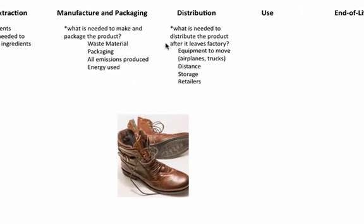The distribution stage looks at what is needed to distribute the product after it leaves the factory. Think about equipment to move it — is it traveling by airplane or truck? The distance matters: a large distance versus a small distance affects how much gasoline you use, whether you need roads, and storage. Does this product need to be stored for a long period of time? Does it need refrigeration? And what about retailers — what do they need, such as lights and labor? Lots of different aspects go into each of these.